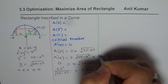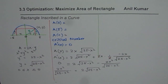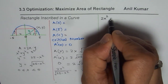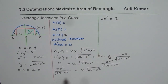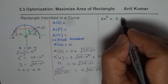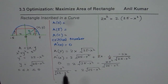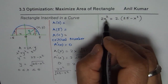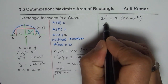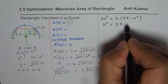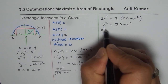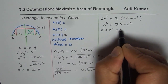Cross multiplying, because the radical times itself gives the inside number, we get 2x² = 2(25 − x²). The 2s cancel, so x² = 25 − x².